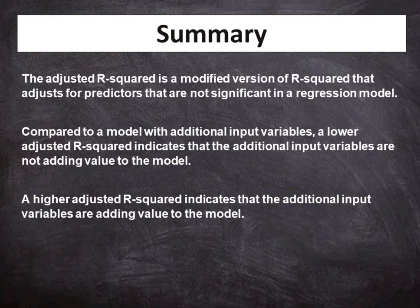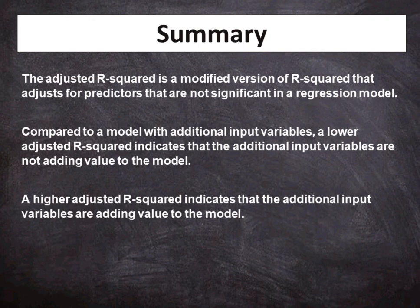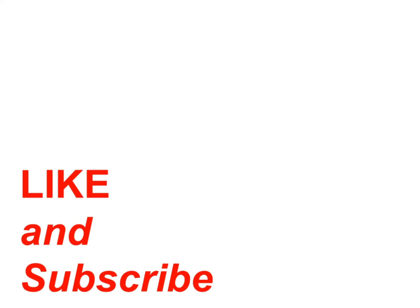In summary, the adjusted R-squared is a modified version of R-squared that adjusts for predictors that are not significant in a regression model. Compared to a model with additional input variables, a lower adjusted R-squared indicates that the additional input variables are not adding value to the model. A higher adjusted R-squared indicates that the additional input variables are adding value to the model. There will be a series of videos for regression analysis. Remember to subscribe to my channel so that you will not miss out my next videos. Bye, see you next time.